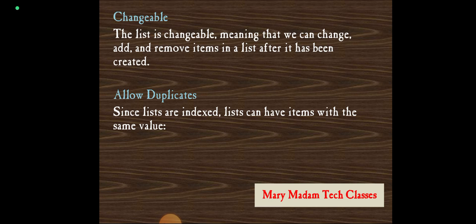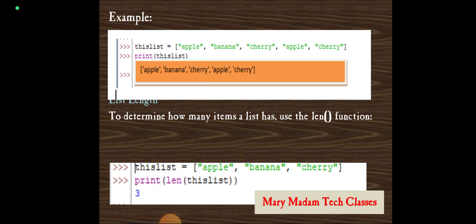Allow duplicates. Since lists are indexed, lists can have items with the same value. For example, thislist equals to apple, banana, cherry, again apple, cherry. I am giving twice apple and twice cherry. If I want to print the list, thislist: apple, banana, cherry, apple, cherry. All the duplicate values will be displayed in the form of the output.